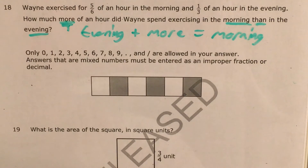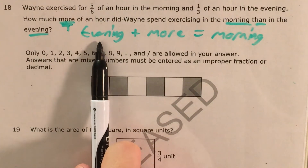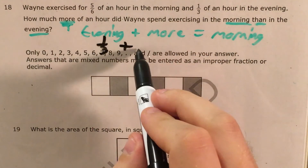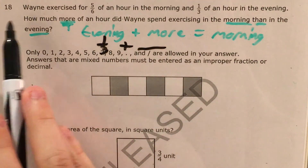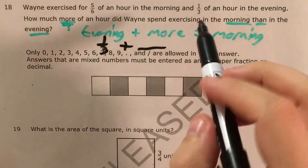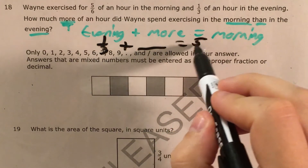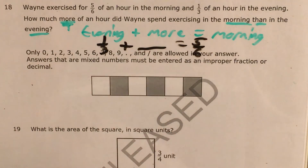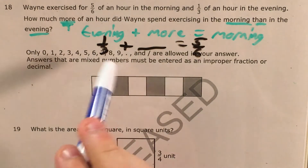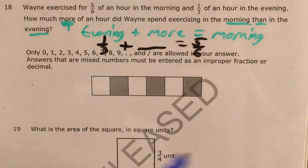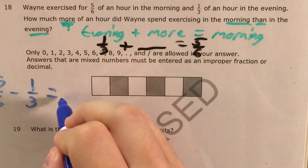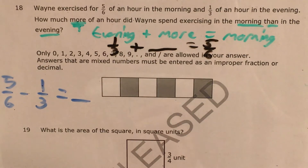Now I'm going to plug in the numbers that we know. In the evening, we know that he spent one-third of an hour. We're adding something we don't know yet, and that's going to equal five-sixths. So we know that one-third plus something equals five-sixths. Now I'm going to use my fact families and say that five-sixths minus one-third equals that same unknown number.